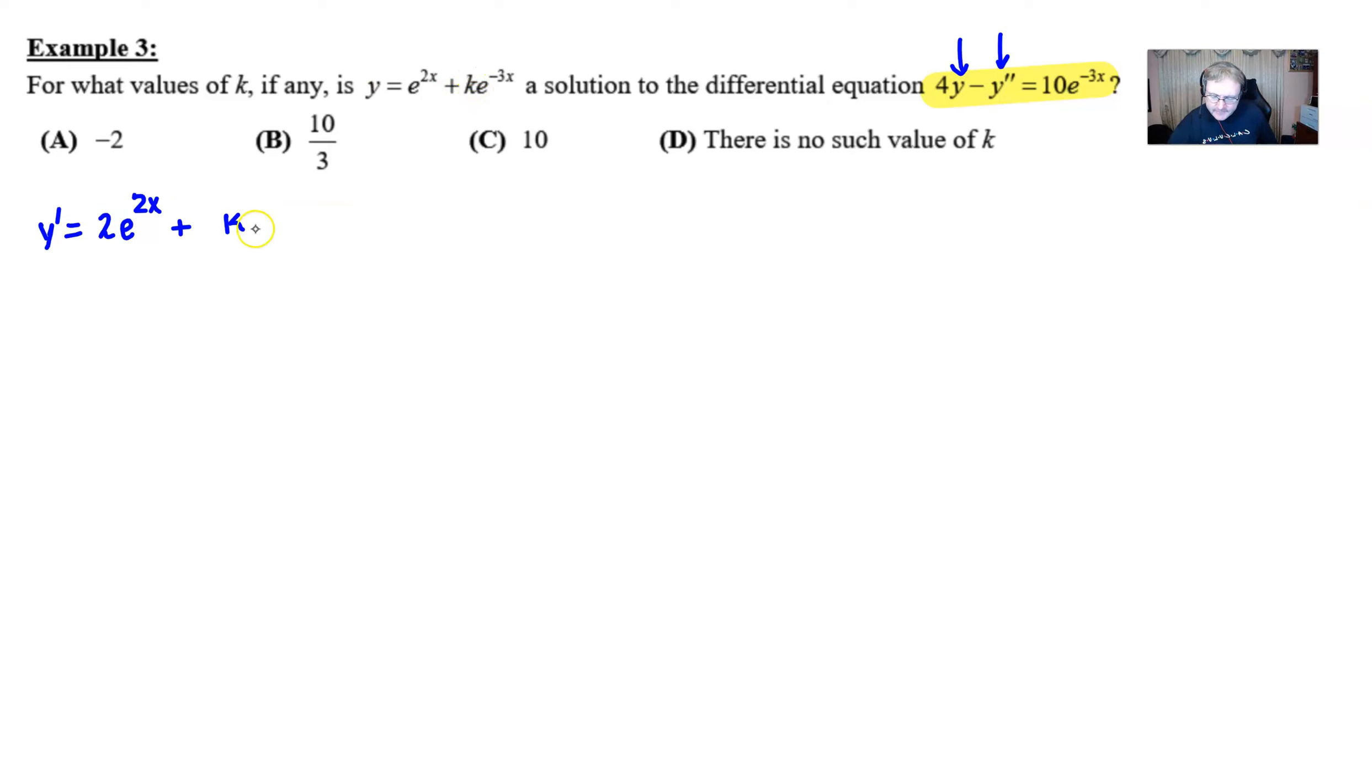Our k just drops straight down. The derivative of e to the negative 3x is going to be e to the negative 3x. But we're going to have to multiply this by a negative 3. So what I might do here is say we could go ahead and change that plus sign to a minus and then plop our 3 right there. And then just go about our business taking the second derivative now.